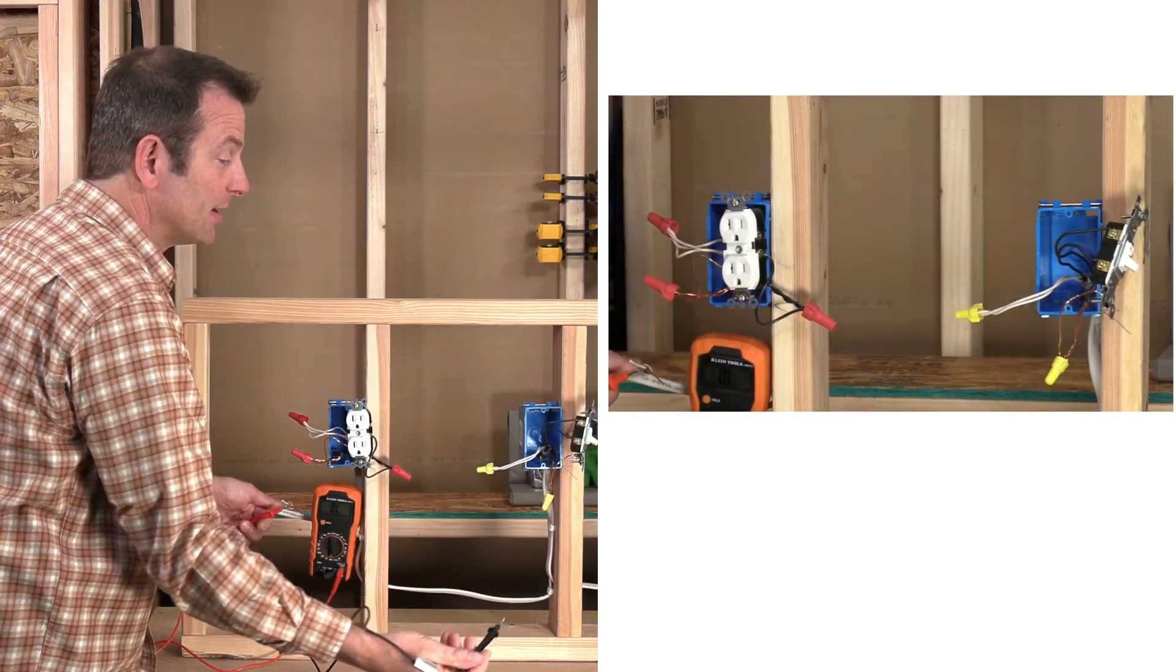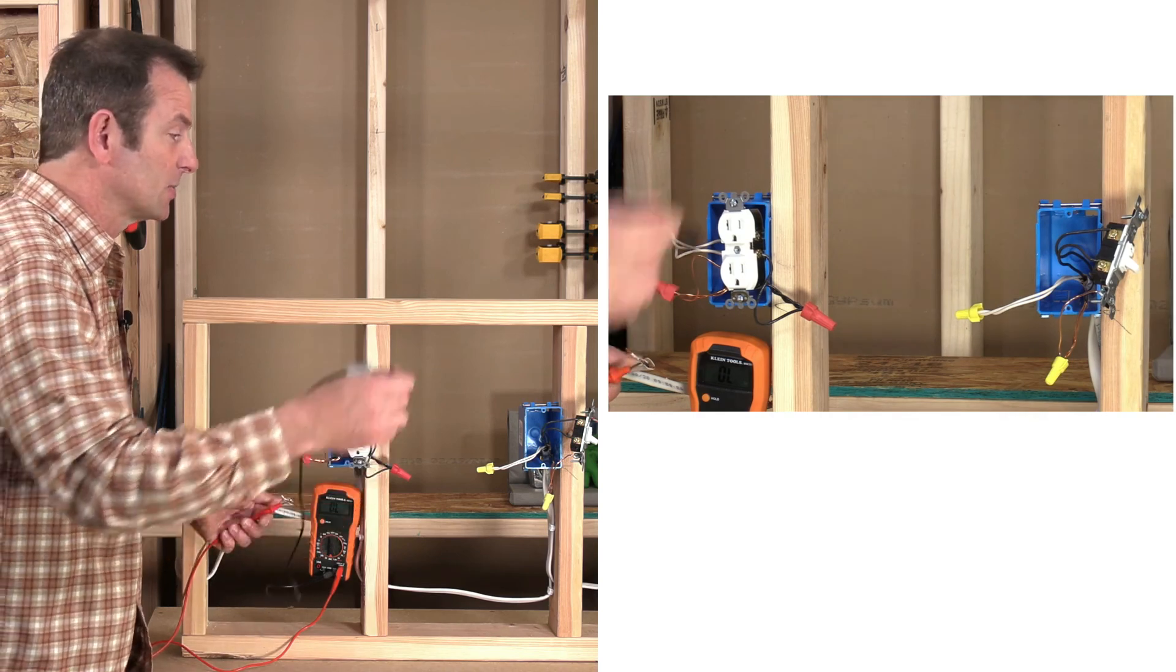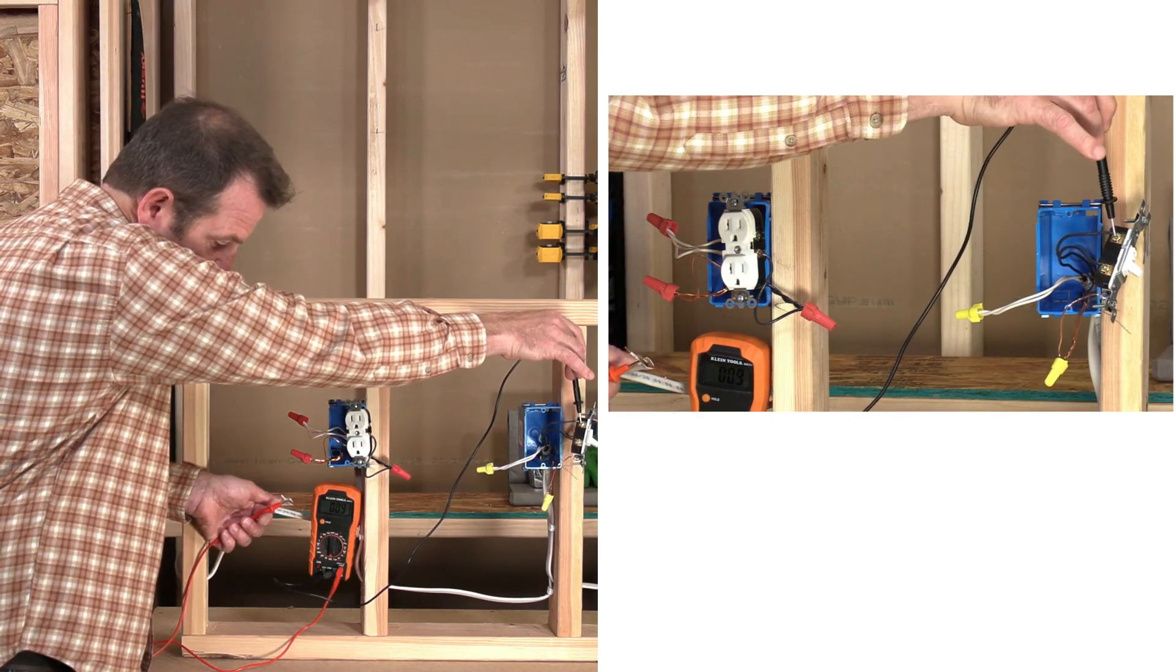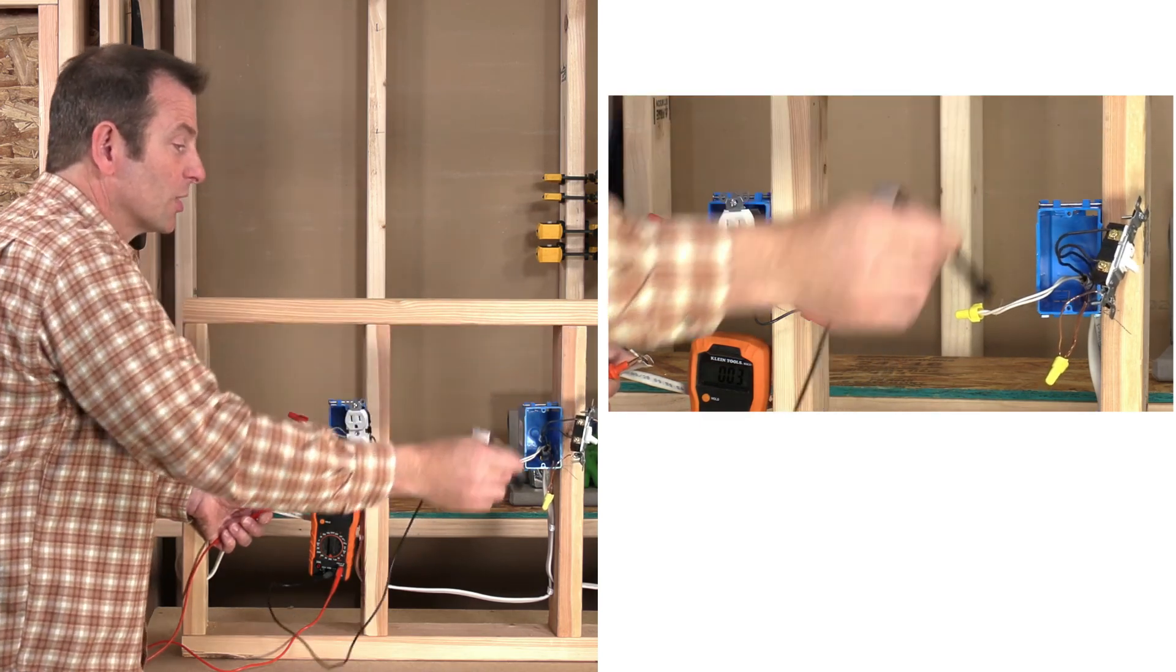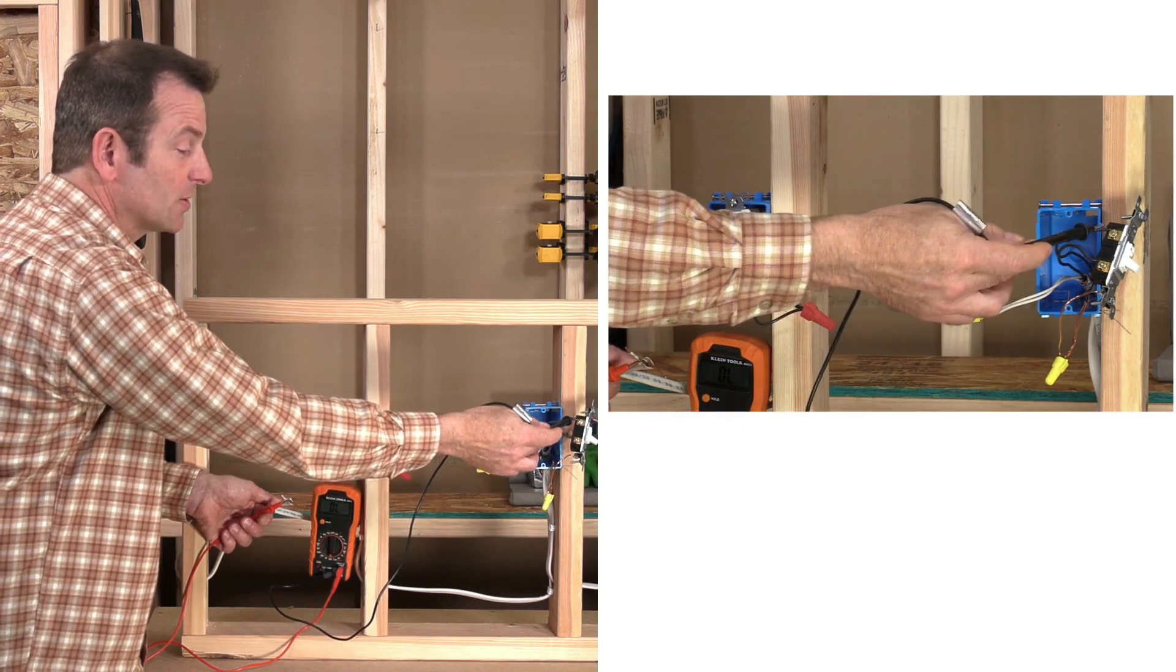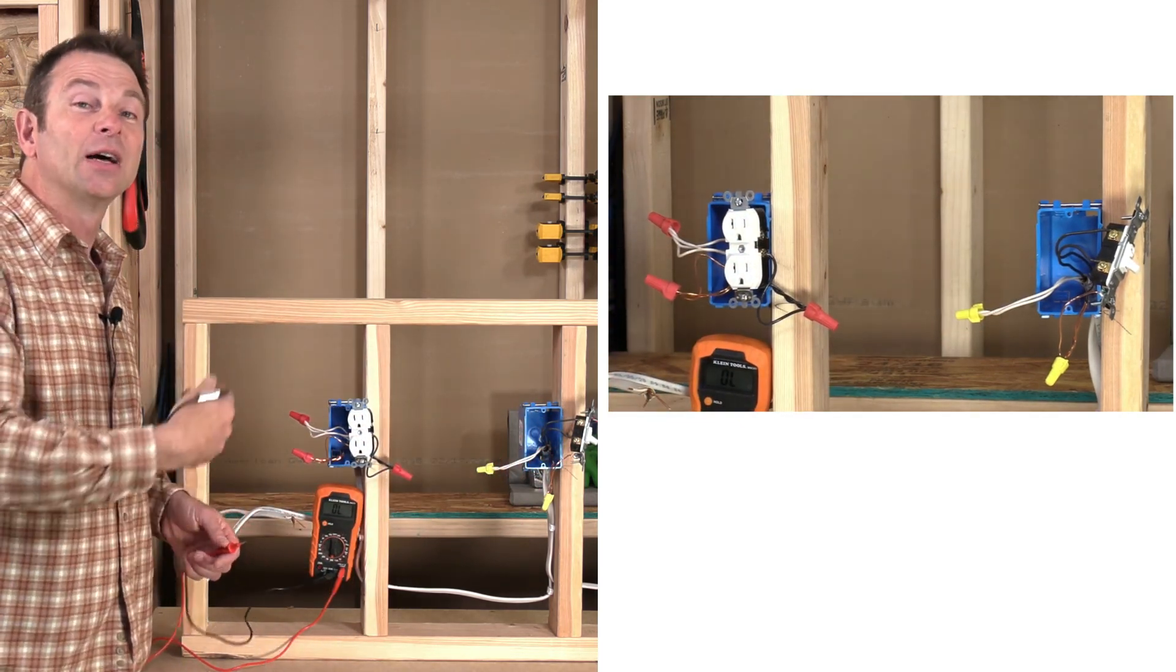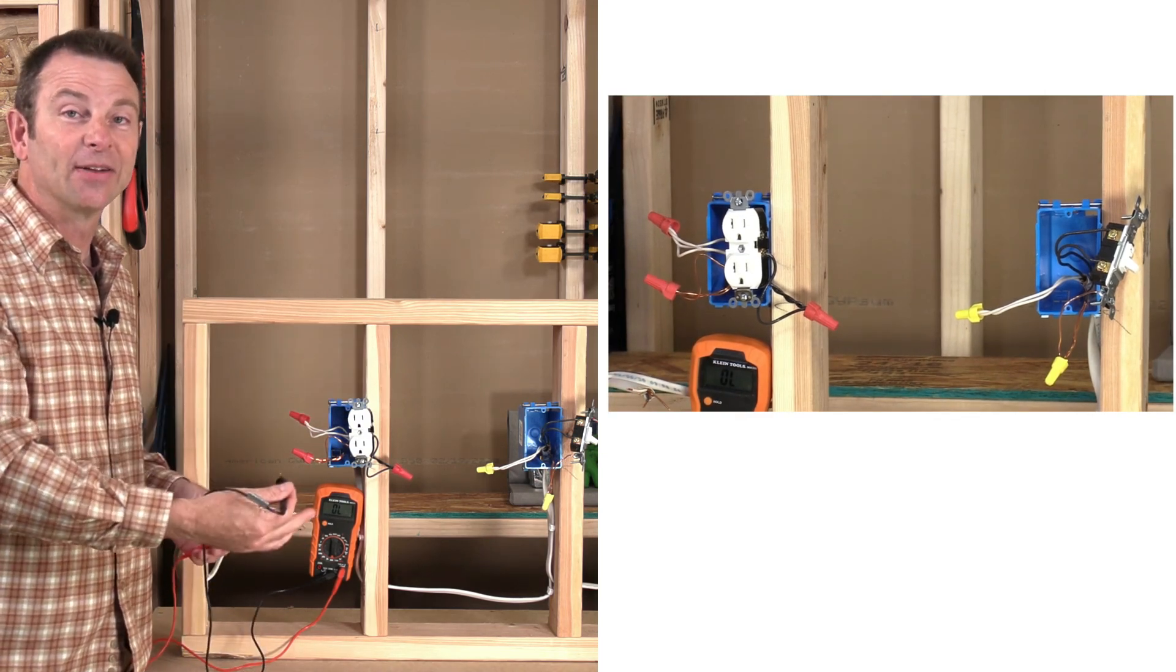So if we turn the switch on, we should get continuity through here, and our resistance should read close to zero. Let's go and test that. So I'll go ahead and put a probe on there. And we are at 004. So we're good. There's a connection through the switch when it's turned on to this terminal. We can then move on to our next box and then think about the circuit and what's happening down there.